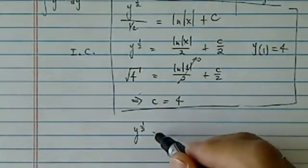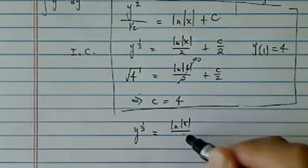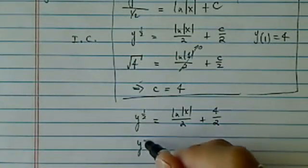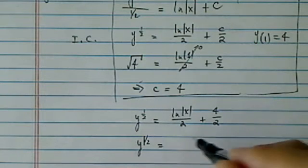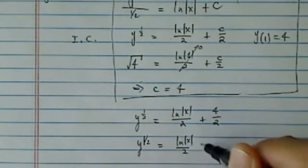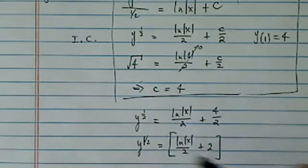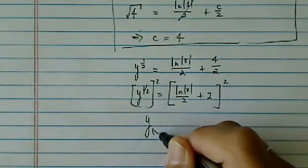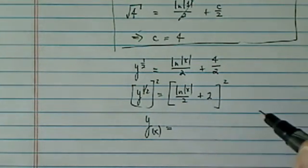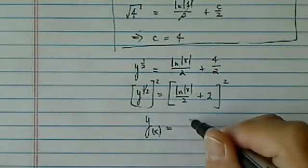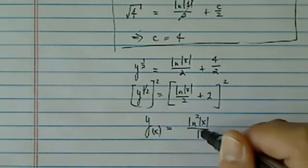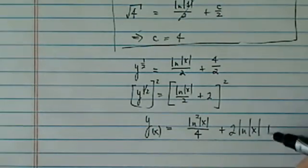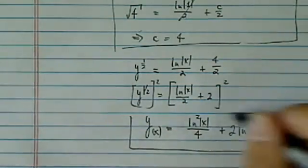Now let's plug everything back. We have y to the half is equal to natural log of x divided by 2 plus 4 over 2, which simplifies to natural log of x divided by 2 plus 2. This whole thing is going to be squared so I can solve for y. That gives us natural log squared over 4, plus twice those things multiplied which is 2 natural log of x, plus 4. So here's our equation.